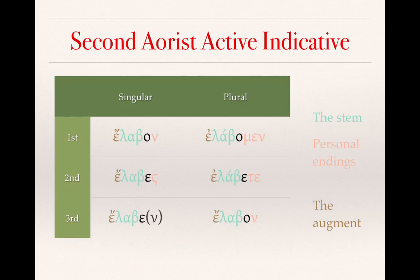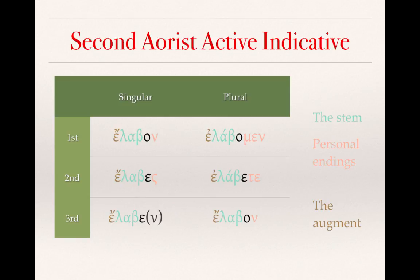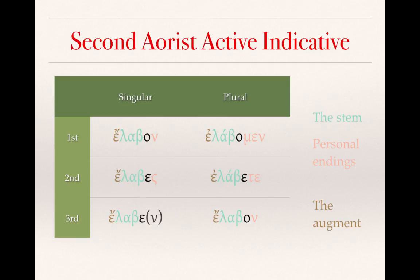Here is the chart for the second aorist active indicative. The stem is in lighter green or blue, personal endings in salmon, and the augment in brown. In contrast to the first aorist active indicative, we don't see the sigma-alpha as the marker. Rather, we have a shortened form of the verb — this example is from lambano — giving us the modified stem lab. So: elaban, I took/received; elabes, you took/received.